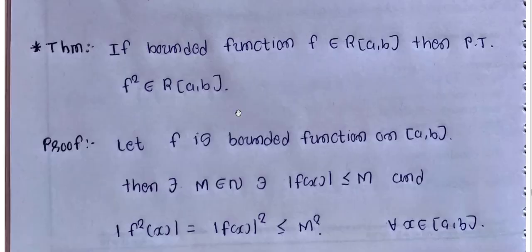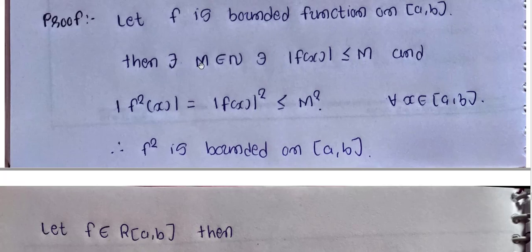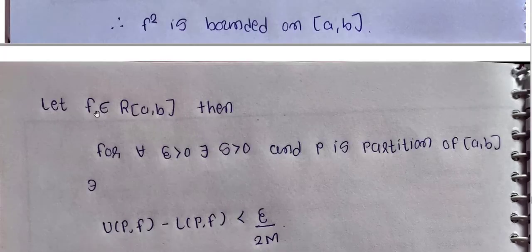Next theorem: if bounded function f is Riemann integrable over closed interval [a, b], then prove that f square is also Riemann integrable over closed interval [a, b]. Let f be a bounded function on closed interval [a, b]. Then there exists capital M belonging to natural numbers such that mod of f of x is less than or equal to M. Now mod of f squared of x equals mod of f of x squared, which is less than or equal to M squared for every x in [a, b]. Therefore f square is bounded on closed interval [a, b].